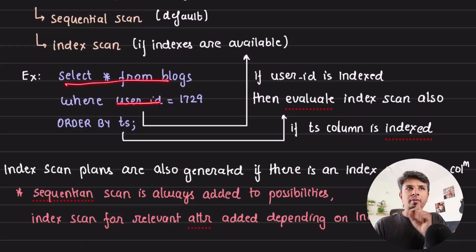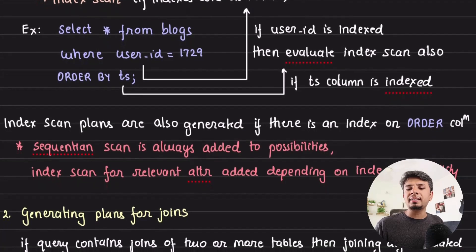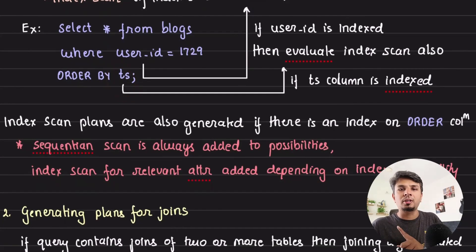For example, if my query is select star from blogs where user ID equals 1729 order by timestamp, then the sequential scan of the blogs table is added. Another variation is where if the index on user ID exists, it would add an index scan on the table on that specific index. And because I am ordering by timestamp, it would also check if there is an index available for the timestamp column.